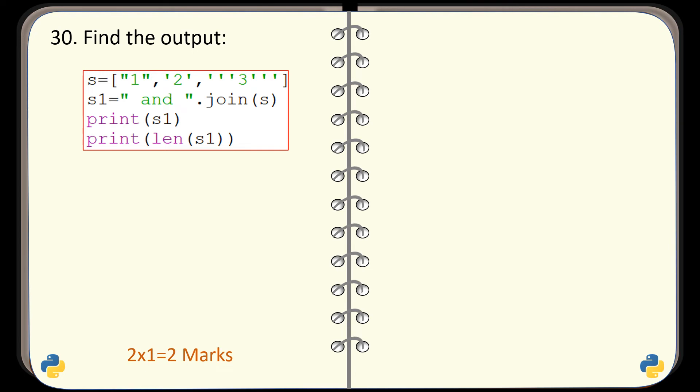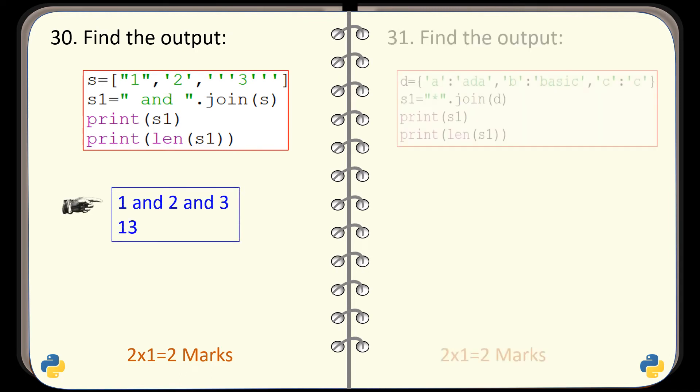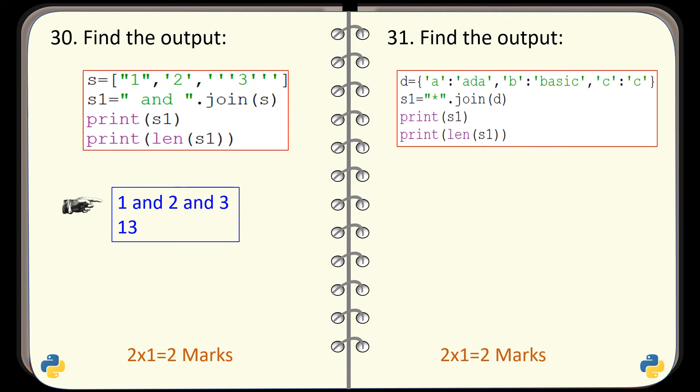Question number 30. Again, find the output of this given code. And the output generated by this code is this one. Question number 31. Find the output generated by this code. And the output is this one.